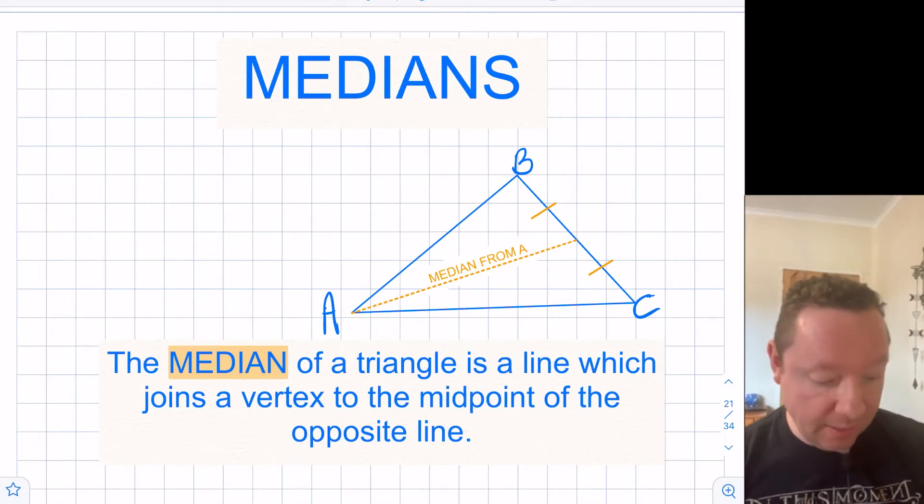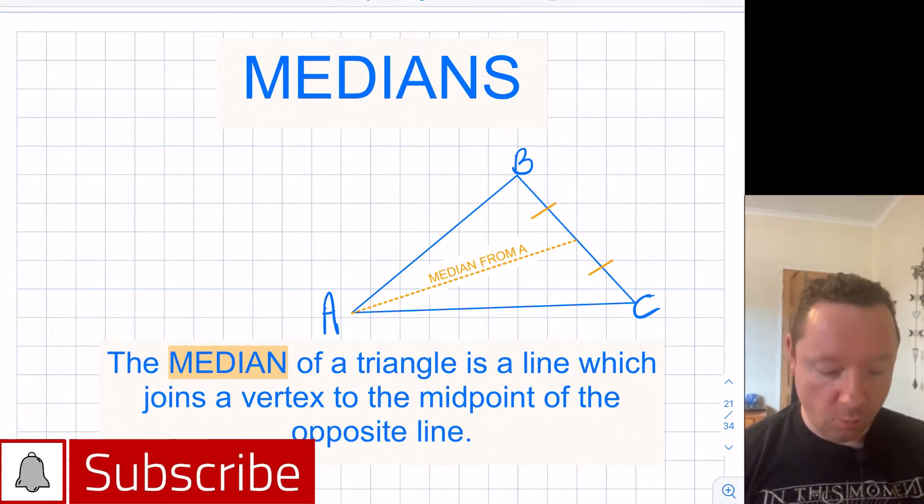So what is a median? Well, a median of a triangle is just a line which joins a vertex to the midpoint of the opposite line.